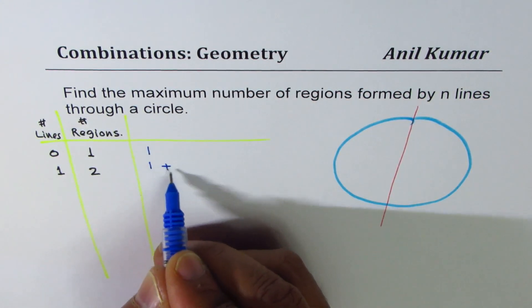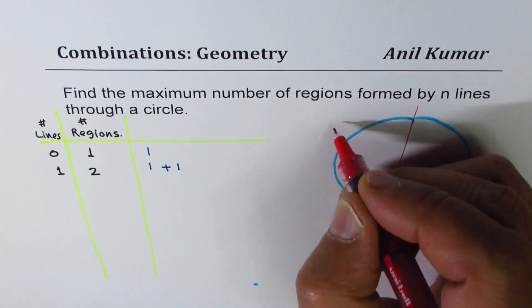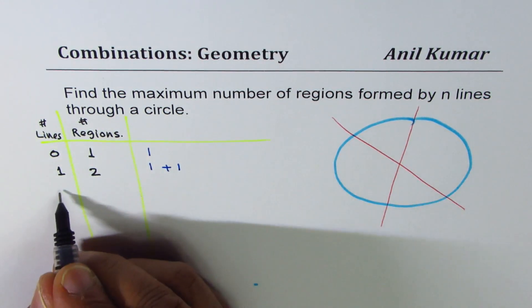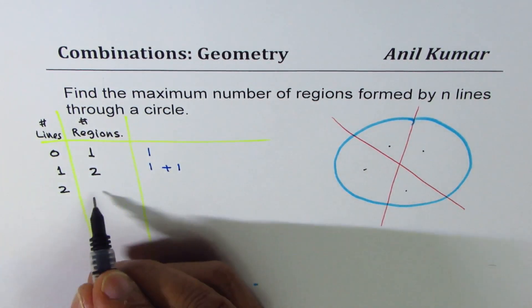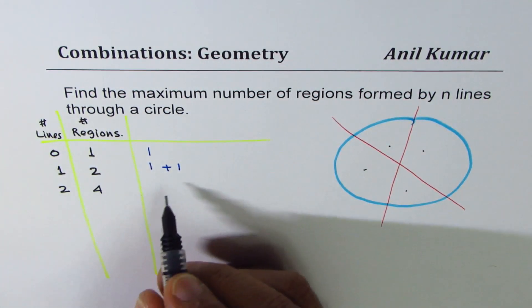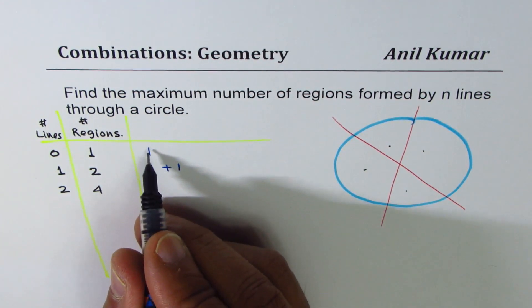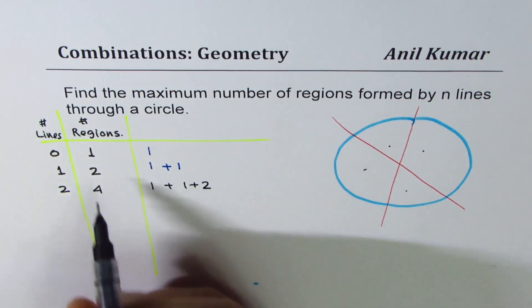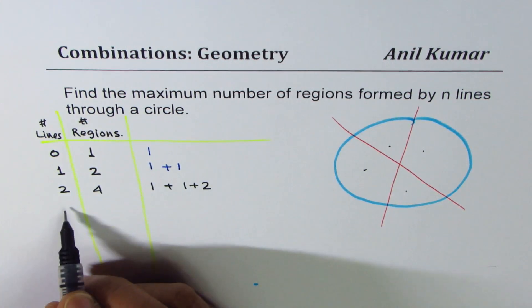Now let's say we draw another line. With two lines, you can count the regions: one, two, three, four. These two lines added two more regions. We could write this as: one was there without lines, and then we added one plus two — one line gave one extra, two lines gave two more.